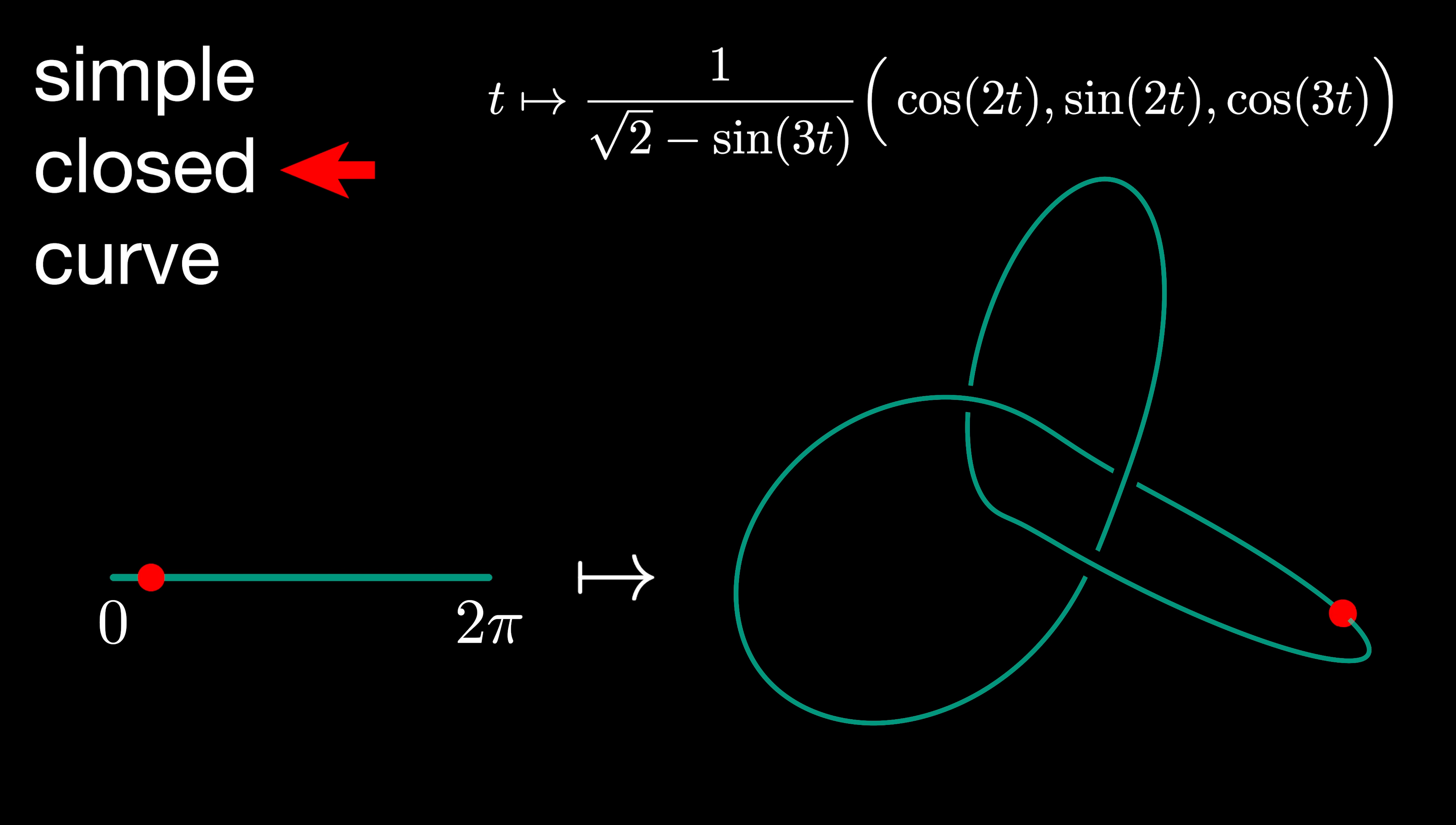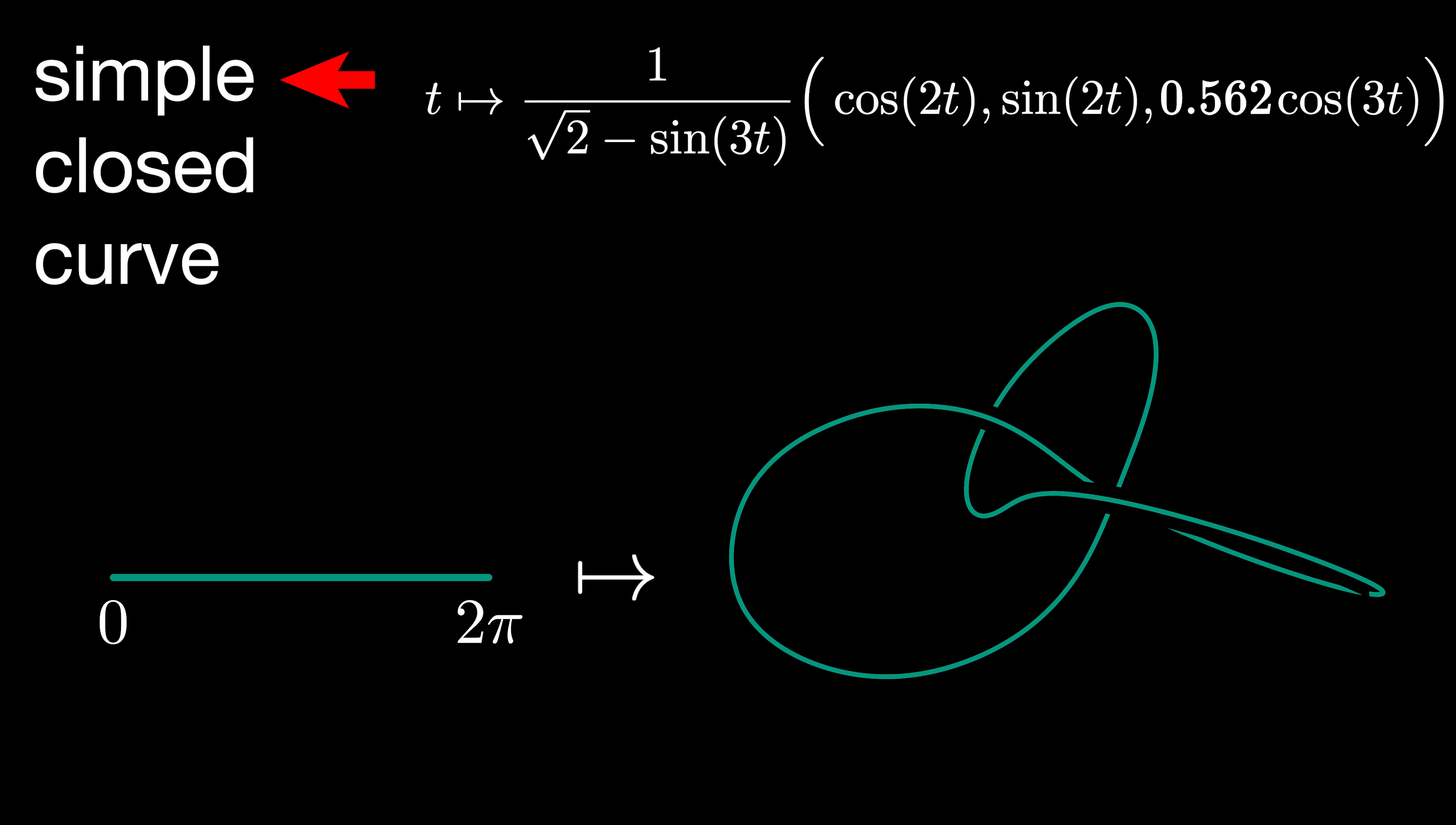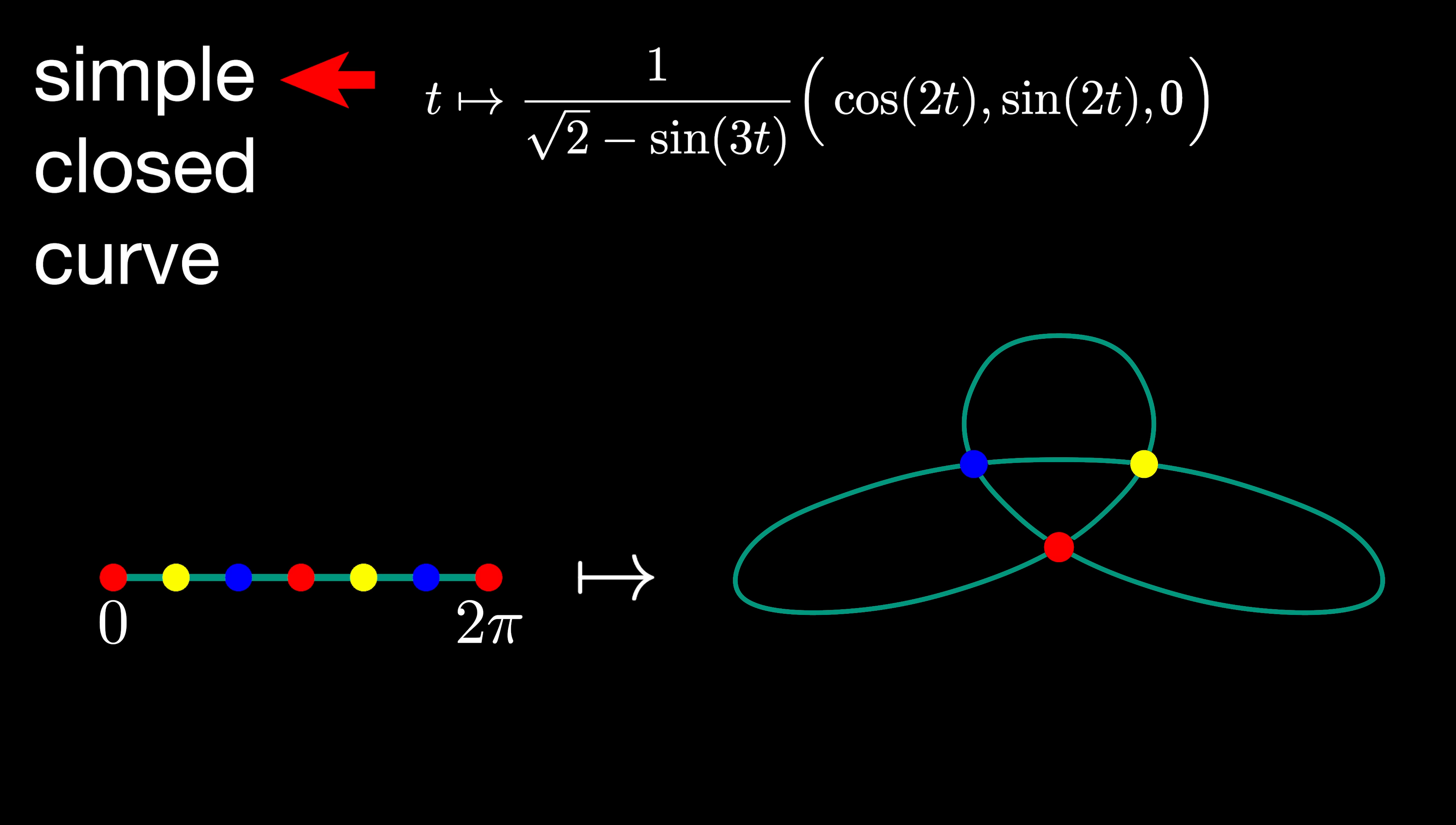A curve is closed if it closes up into a loop like this one does, and it's simple if it doesn't pass directly through itself. In other words, the map never sends two different points on the interval to the same point in the space. So here I've collapsed the trefoil down, and now it's no longer a simple closed curve.